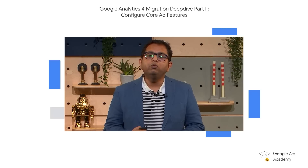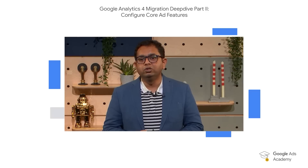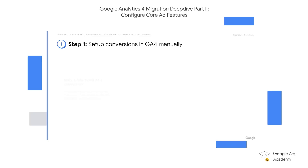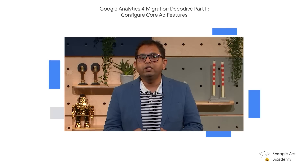The second way to manually create a GA4 conversion is to mark a new event as a conversion. To do this, go to Google Analytics, Admin, Property, Conversions on the left, and then click on new conversion event as shown on this slide.